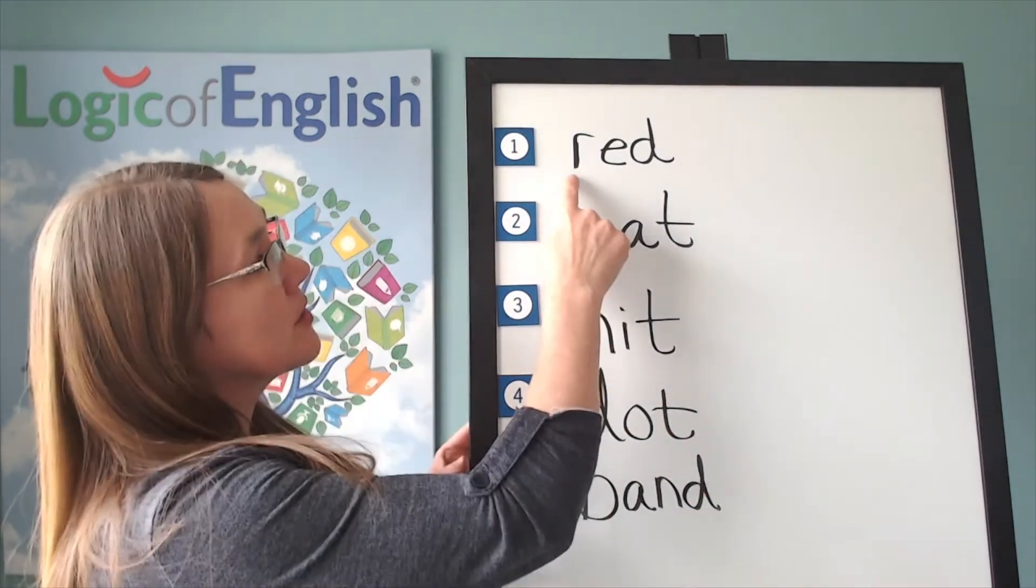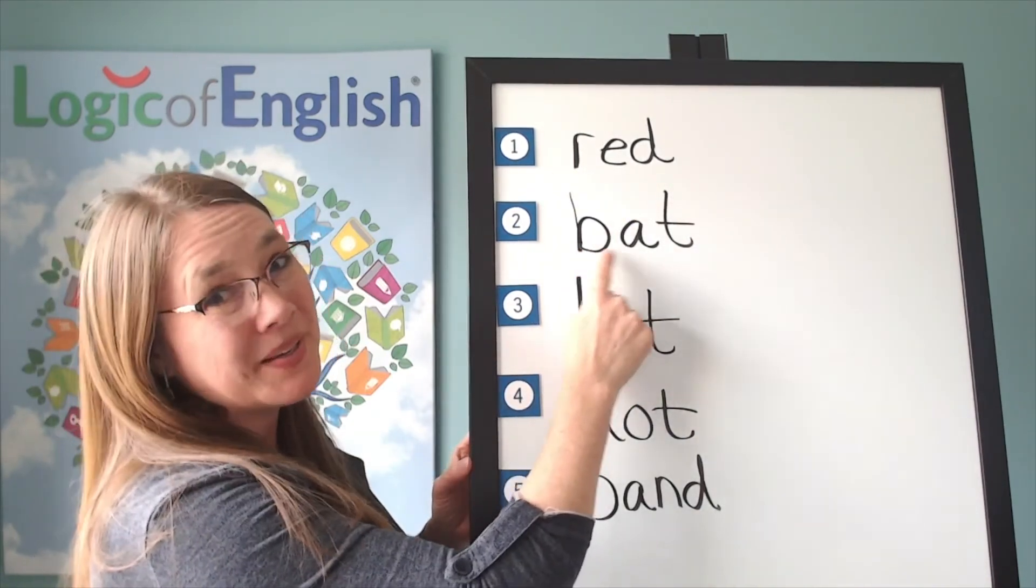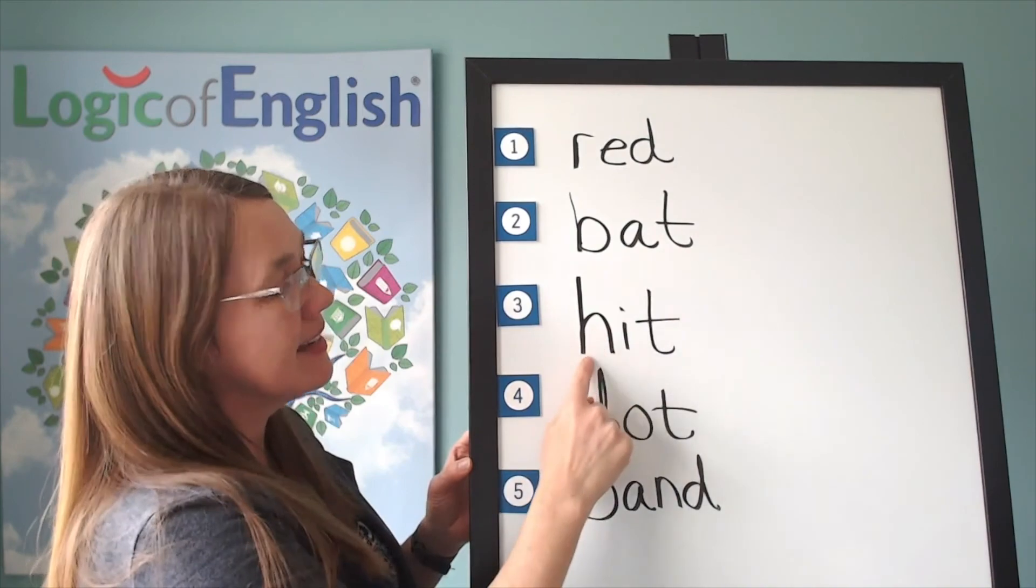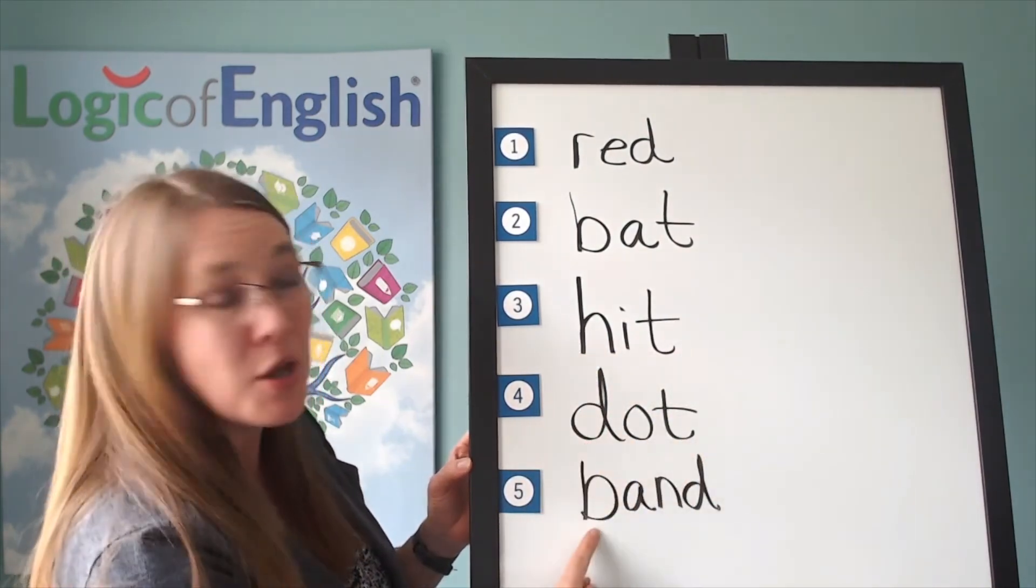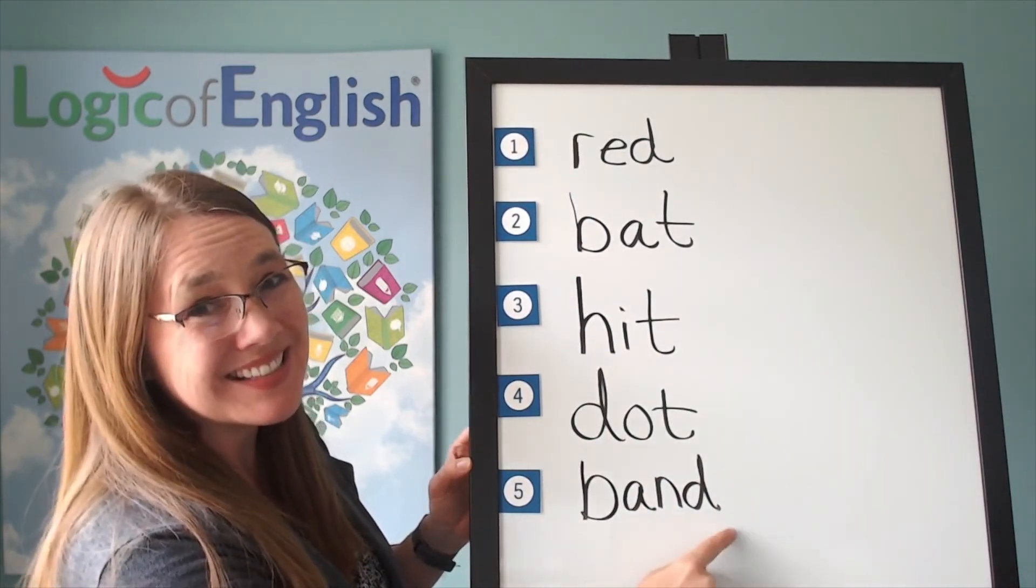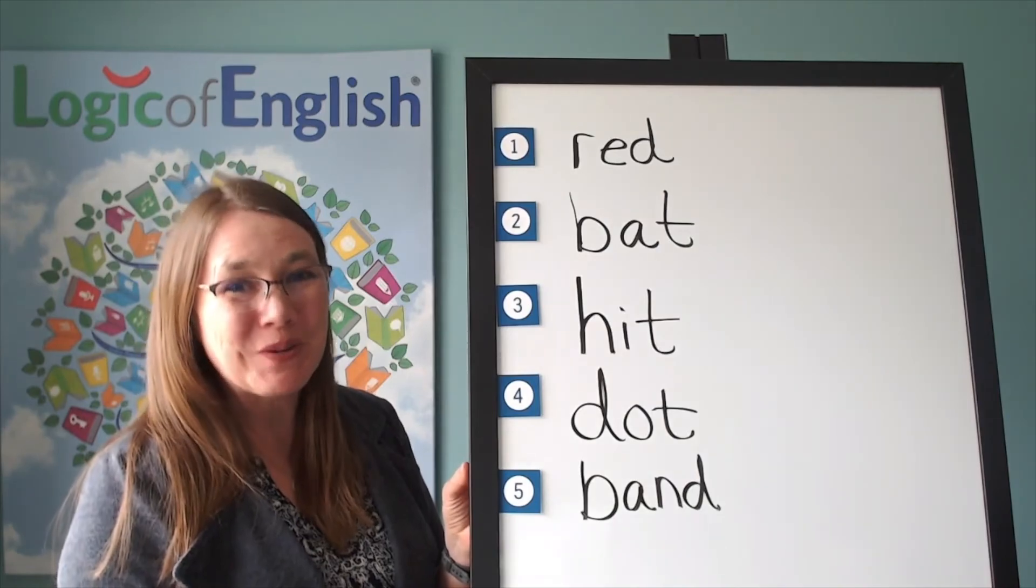Let's read all our words. R-e-d. Red. B-a-t. Bat. H-i-t. Hit. D-o-t. Dot. B-a-n-d. Band. You are doing so great!